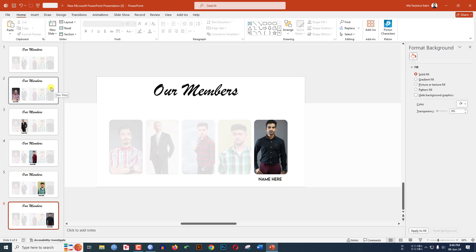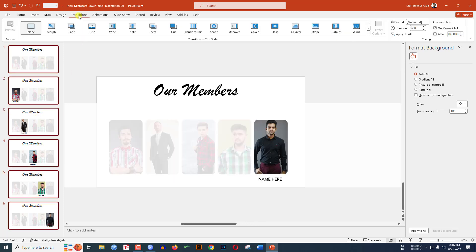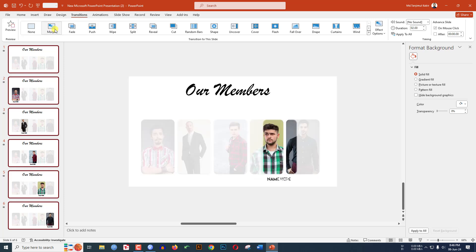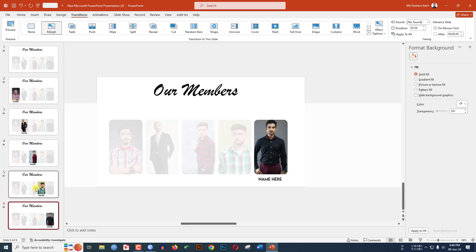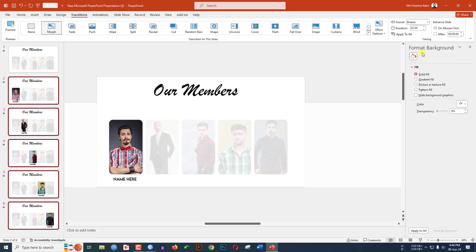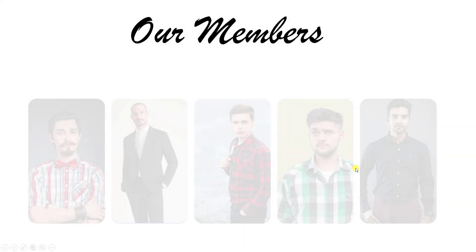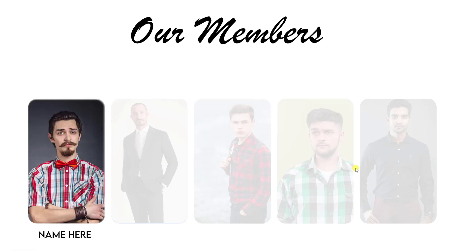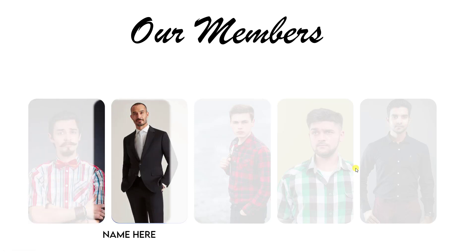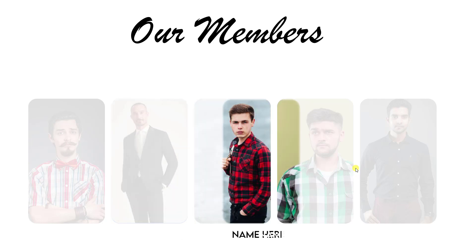Now apply the Morph transition — select all the slides, go to Transition, and click on Morph. Then select the five slides, go to Sound, and apply the 'Breeze' sound. Go to the first slide and watch the slideshow — this is looking beautiful, each slide transition looks perfect.